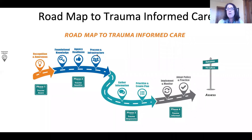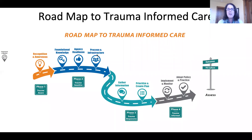To address this, we decided to create a tool that would reflect a sense of sequence and order. For example, we know that people need to receive training before they are ready for implementation. In addition to representing a sense of sequence, we wanted to include elements that reflect the process of organizational change. Therefore, we included ideas such as agency readiness, process and infrastructure, and adoption and monitoring. These are all referred to as steps in implementation, so all of these icons are representing different steps in the implementation process.